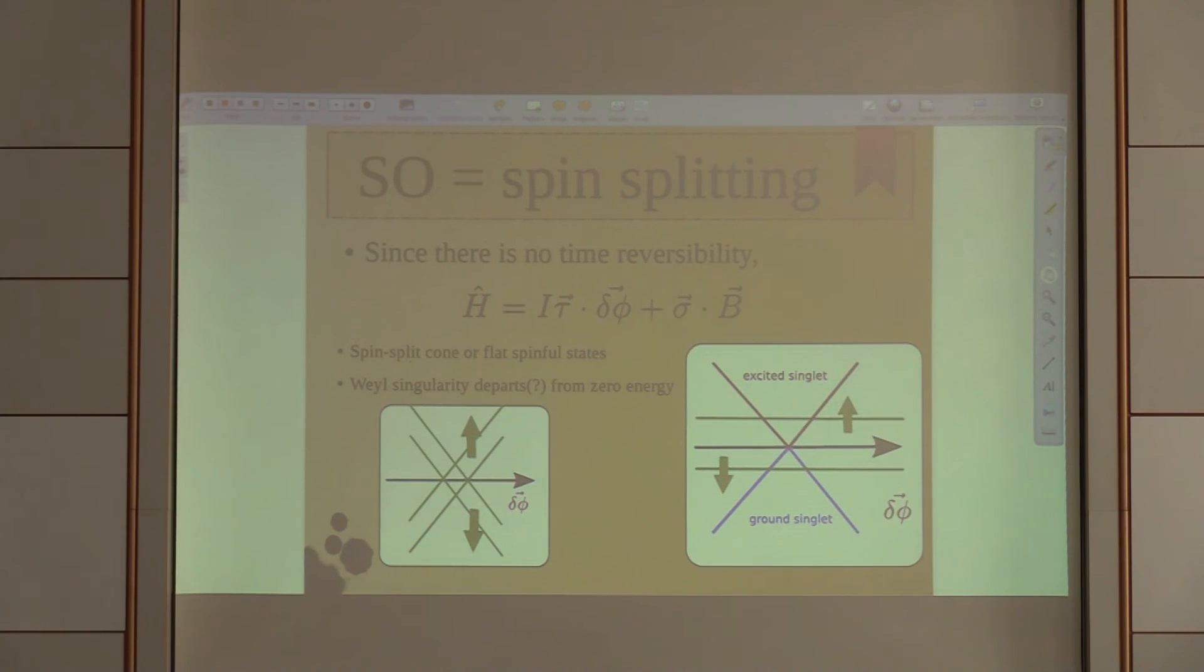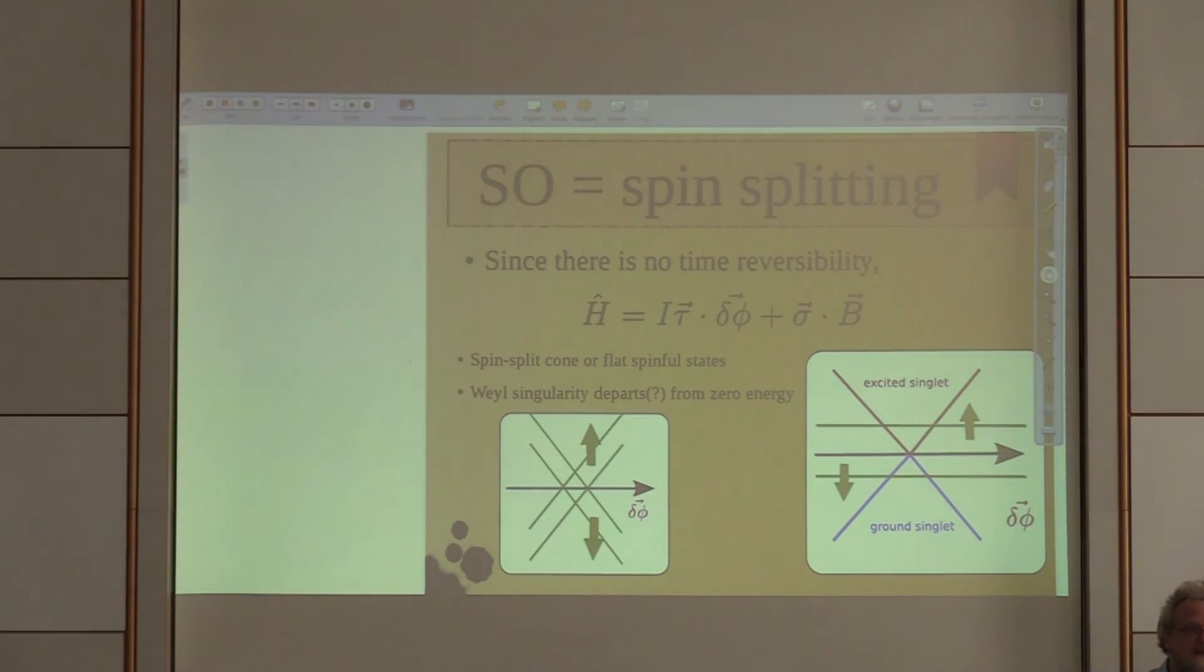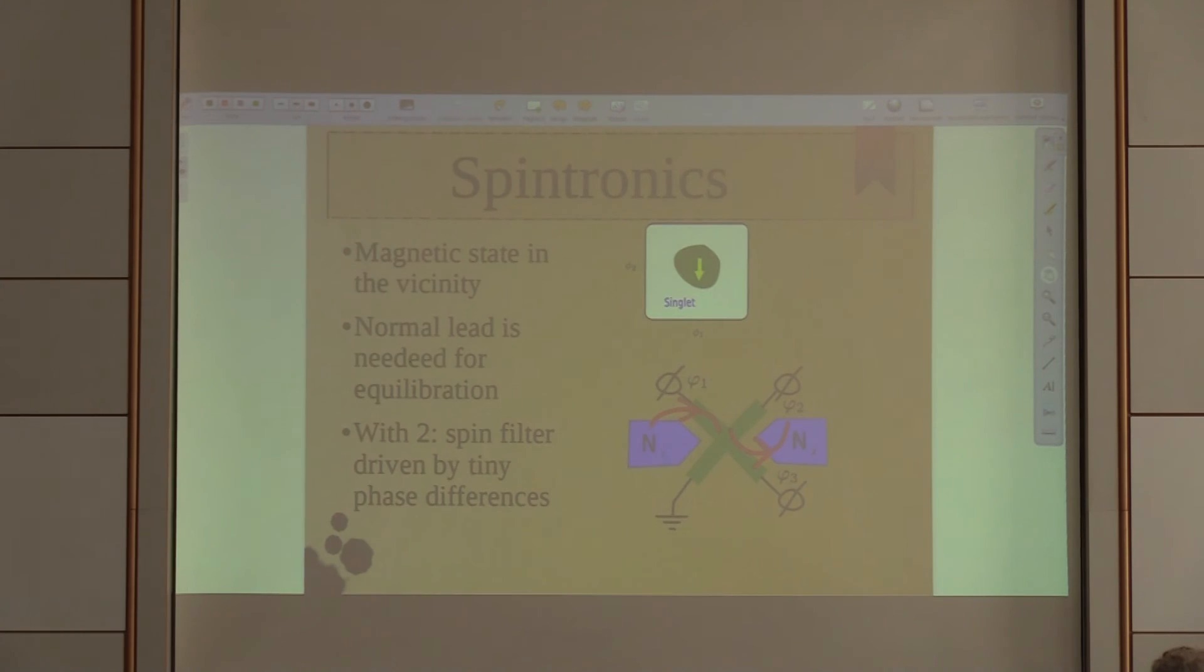Let me draw energy of the ground state which is singlet, of the first excited state which is also singlet, and two spin-full states corresponding to even-odd number of electrons in my junction. In this case it becomes marvelously simple. We see that there is still one point in the spectrum of singlet states and there is no singularity in the spectrum of spin doublet.